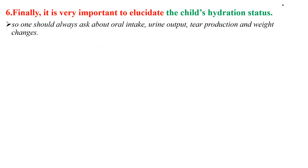Finally, it is very important to elucidate the child's hydration status. One should always ask about oral intake, urine output, tear production, and weight changes when facing a vomiting child.